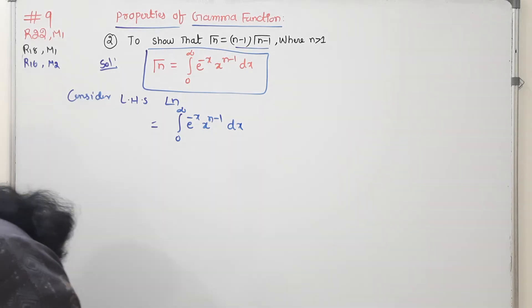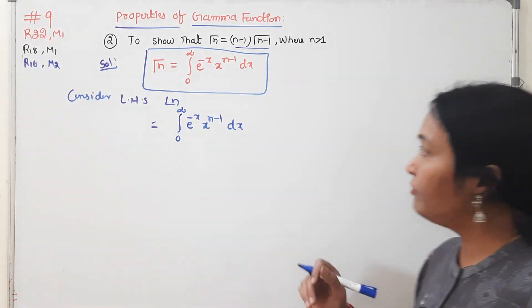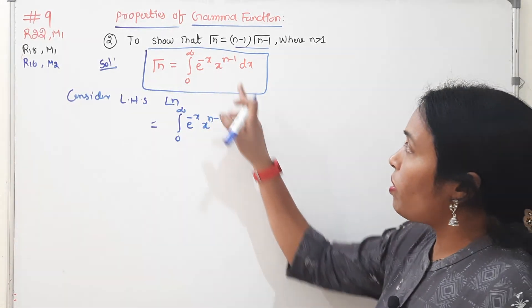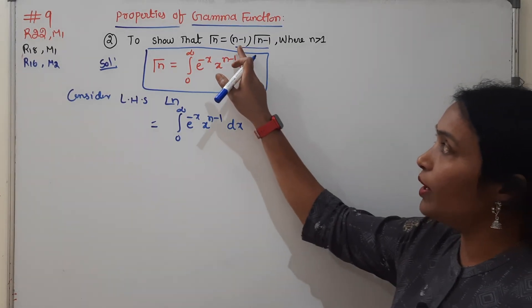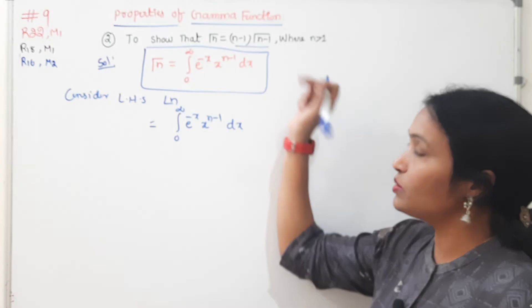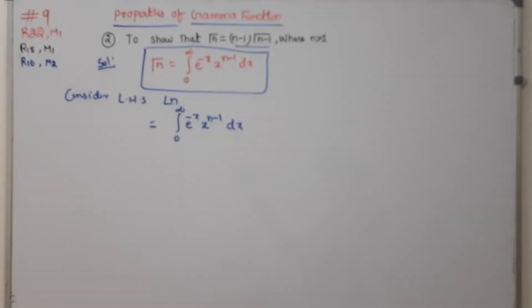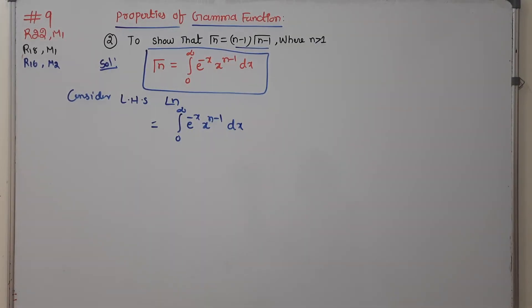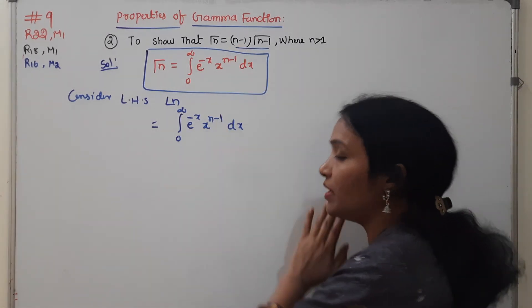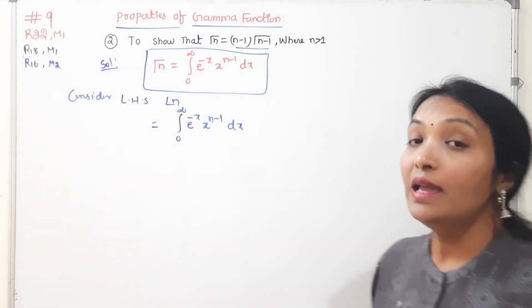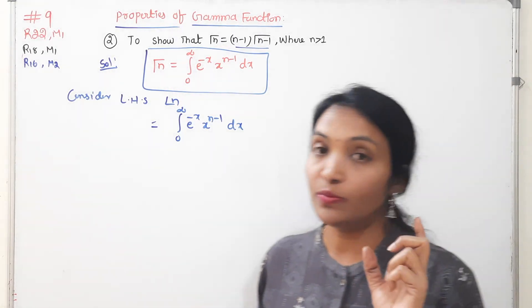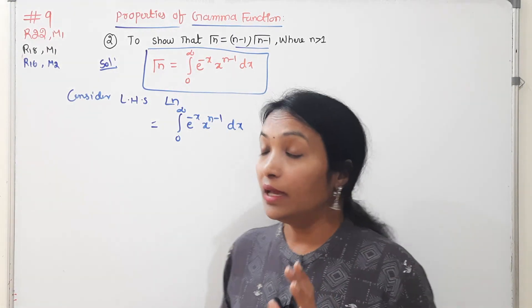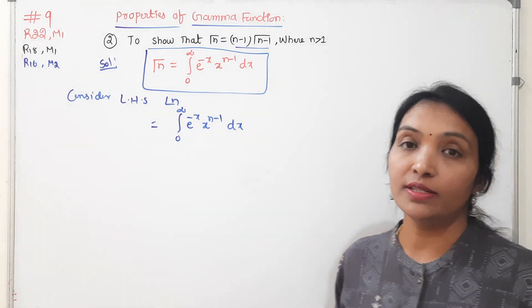A small clarification: I am going to show gamma(n) equals n into gamma(n minus 1). I am going to substitute n in place of n minus 1. I will use the integration by parts principle — this is very important in this chapter. Please remember this concept.